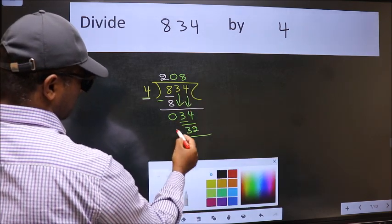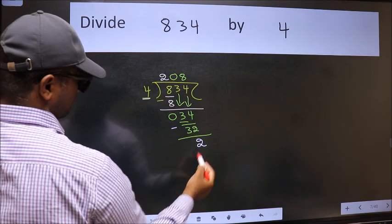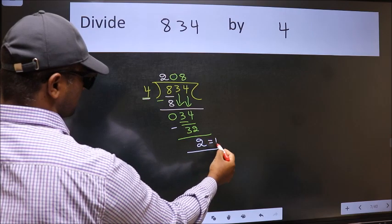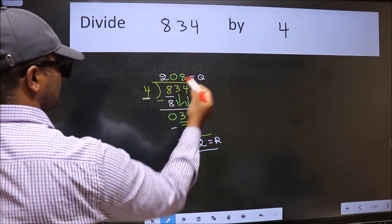Now we should subtract. We get 2. No more numbers to bring it down, so we stop here. This is our remainder and this is our quotient.